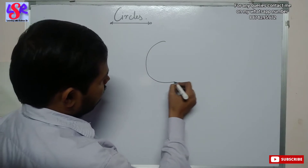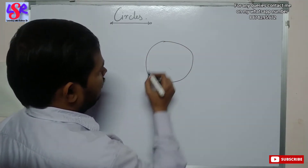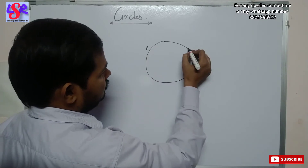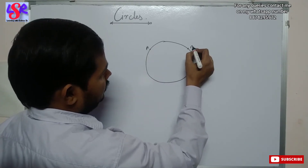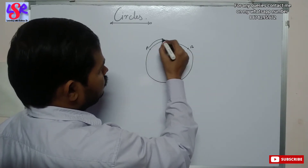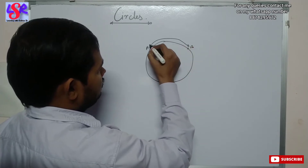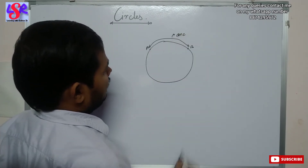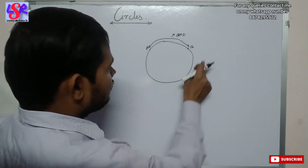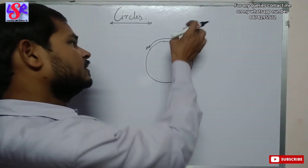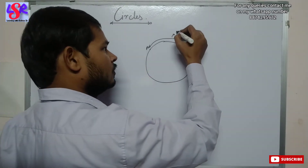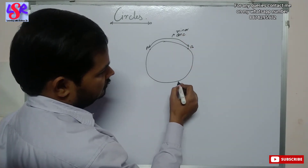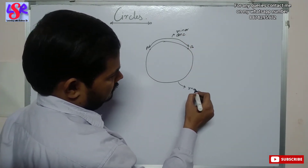Suppose we have a circle in which we have taken two points — let this one be A and this one be B. This portion is known as the arc of the circle, and this will also be an arc. If this arc is small, we call it a minor arc, and if this one is greater, it is known as the major arc.